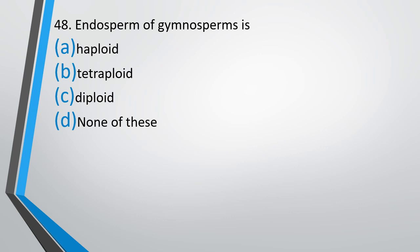Question number 48. Endosperm of gymnosperms is: haploid, tetraploid, diploid, or none of these? The correct answer is option A — that is haploid.